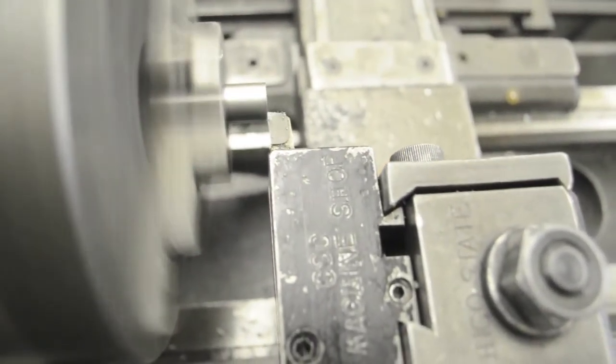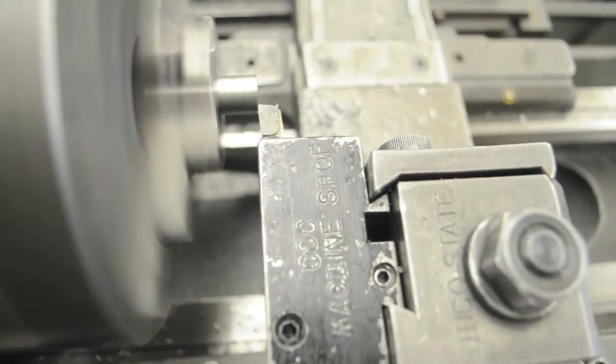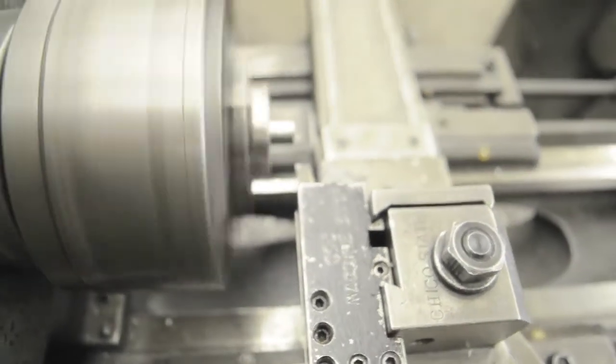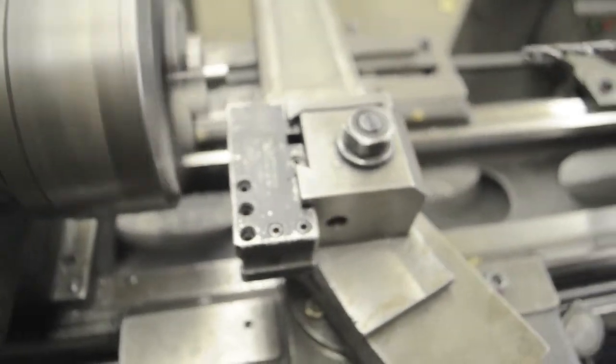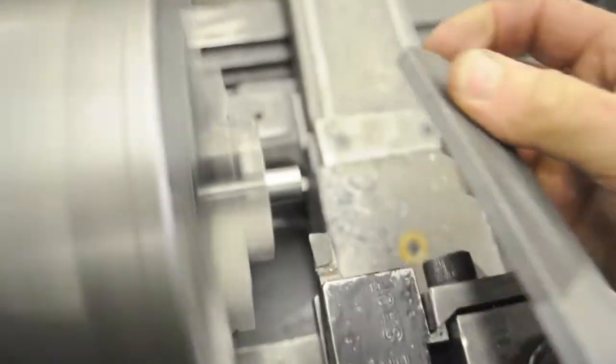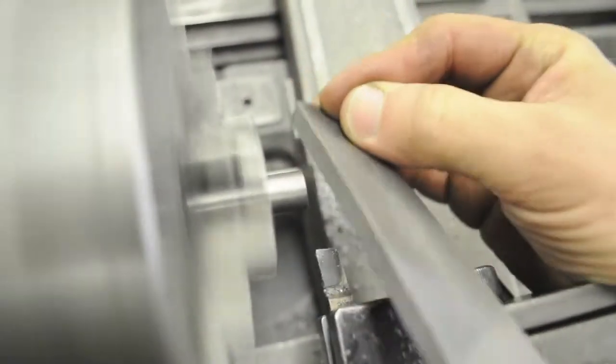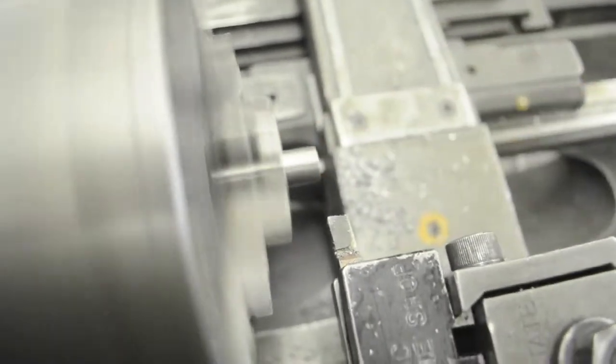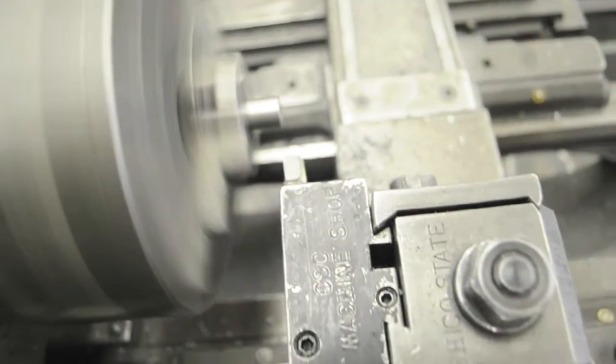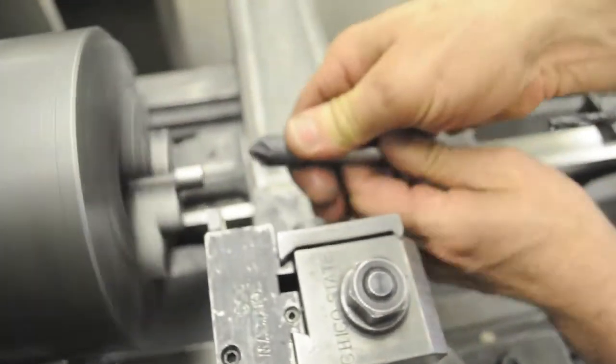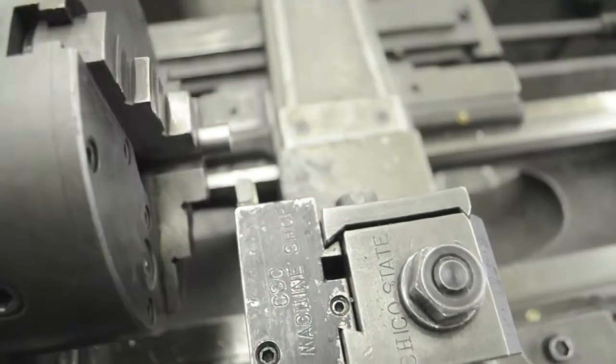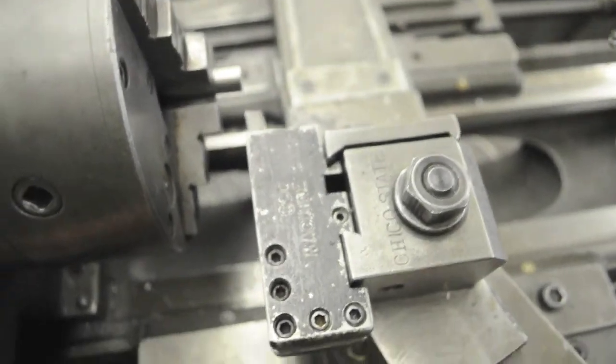Pretty small amount of material. Now I'm pretty confident that that's correct. So I'm going to go ahead and deburr the OD of this end, which I haven't done yet. Small little radius. And then the ID of the bore. Take the part out.